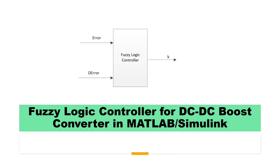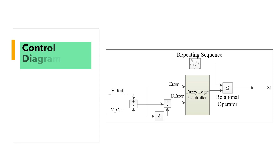Here we have our fuzzy logic diagram. It has two inputs — error and delta error — and one output, which represents K. Here we have our control diagram. We have V reference and V output. We have the delta or the derivative, and the input error and delta error. From the output of the fuzzy logic controller we have K, which is compared in a relational operator with a repeating sequence.